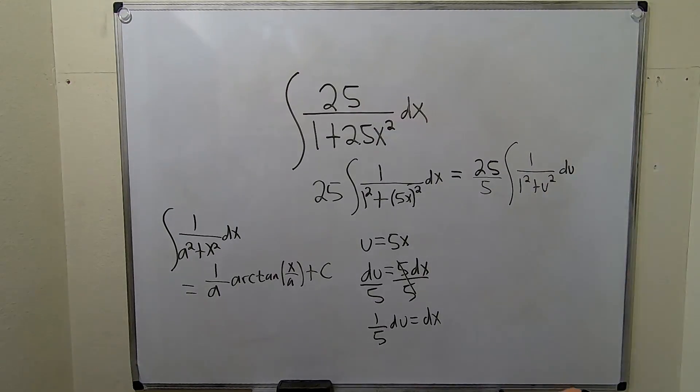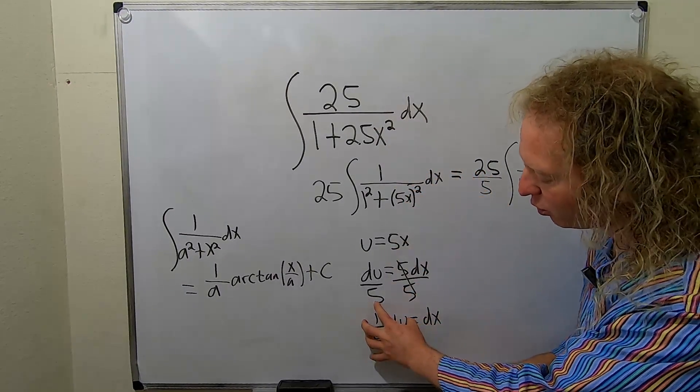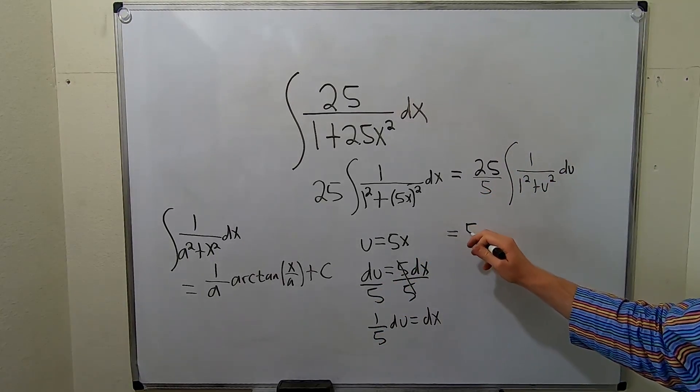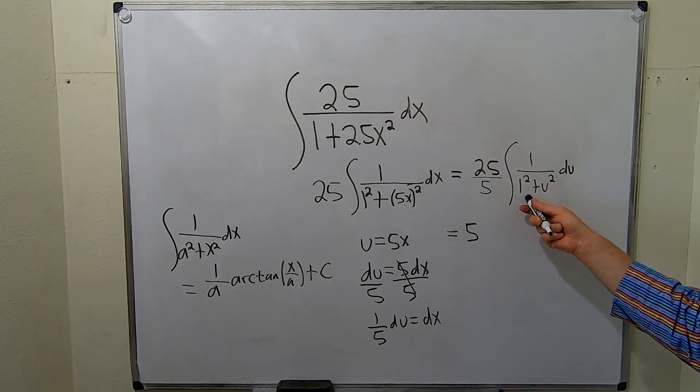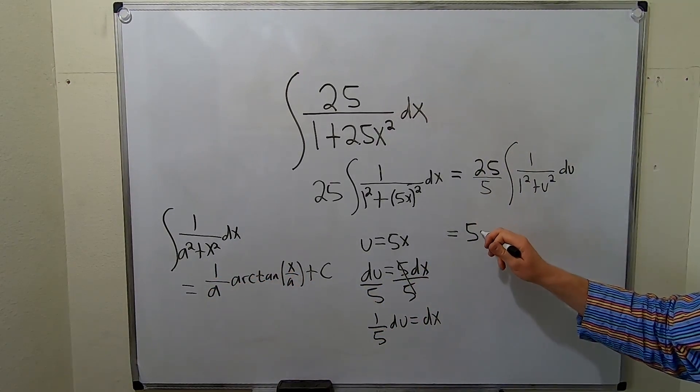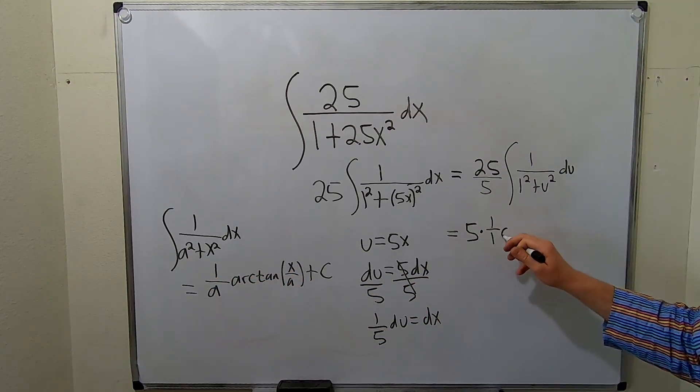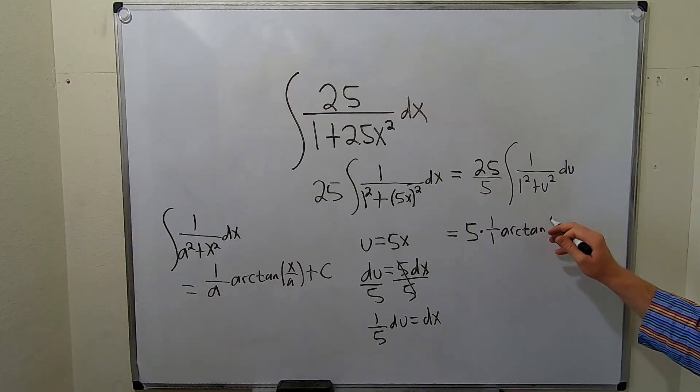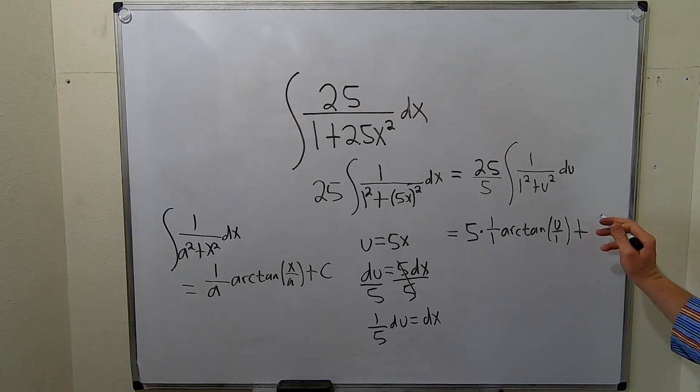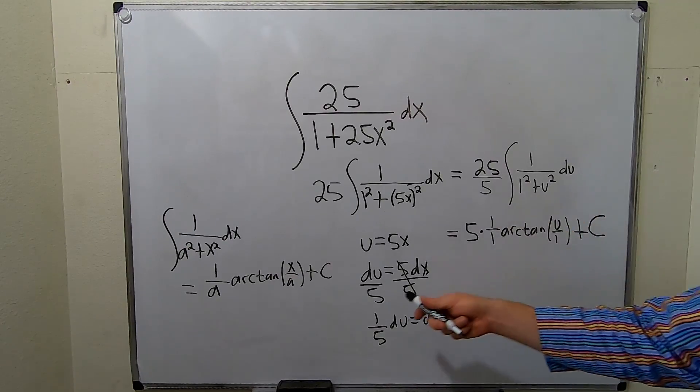Really, really beautiful. So dx is 1/5 du, and you pull that out, and that goes there. So this becomes 5. This, we can use the formula now. So it's 1 over a, which is just 1, but I'll write it. So times 1 over 1 arc tangent of u over 1 plus our constant of integration, capital C. So just applying the formula.